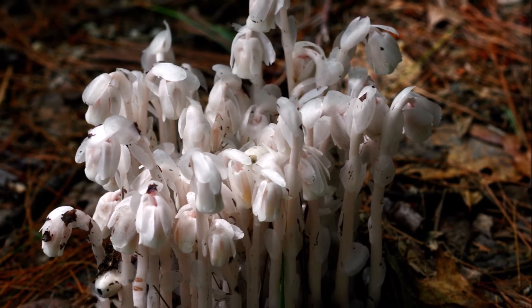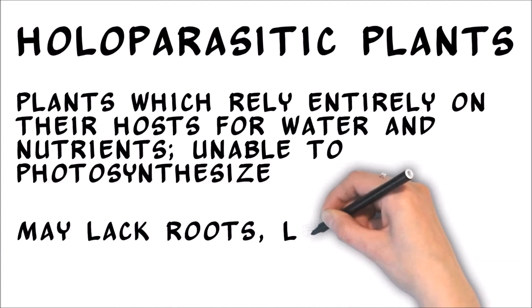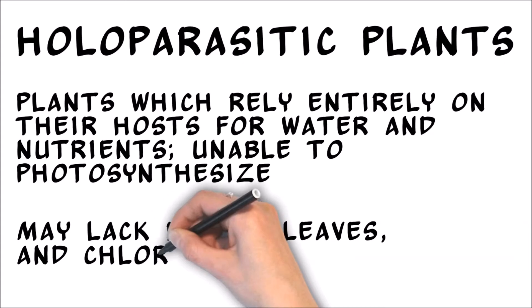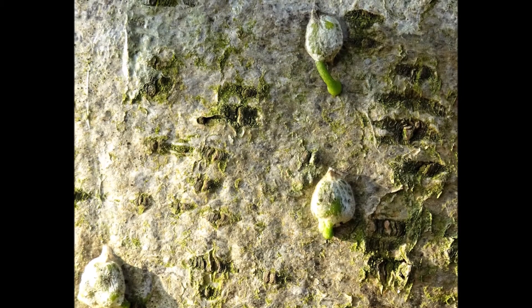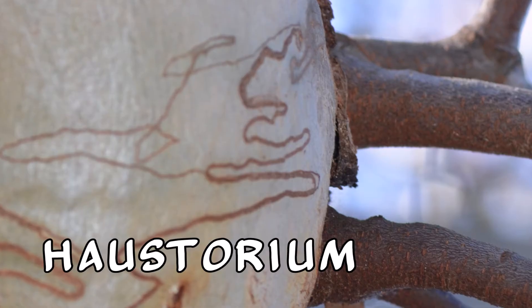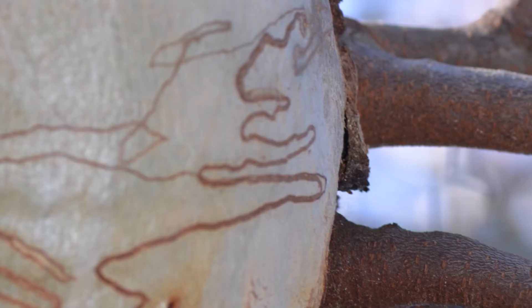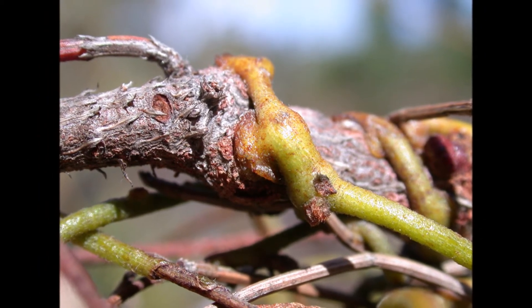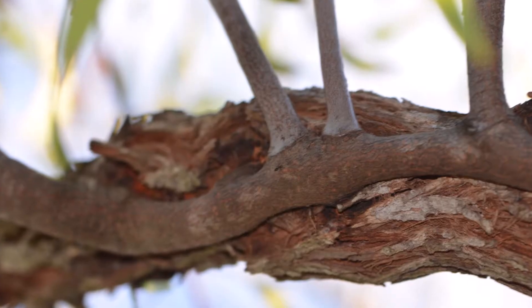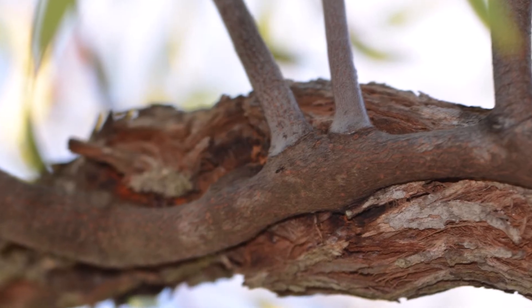In addition, holoparasites may lack typical plant structures like well-developed root systems or leaves, allowing them to assume some truly bizarre shapes. Both hemiparasites and holoparasites use a specialized root-like structure called a haustorium to penetrate the vascular system of their host plant and siphon off valuable water, sugar, and nutrients for their own use. These haustoria may originate in the roots or the stems, and may connect to the roots or stems of the host plant.